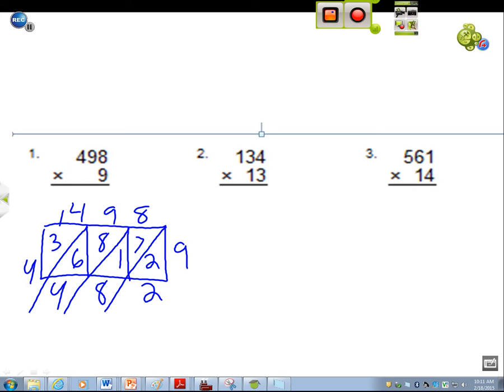Red. I do 134 times 3. And then 4 times 3 equals 12. Then 3 times 30 equals 90. And then 3 times 100 equals 300.